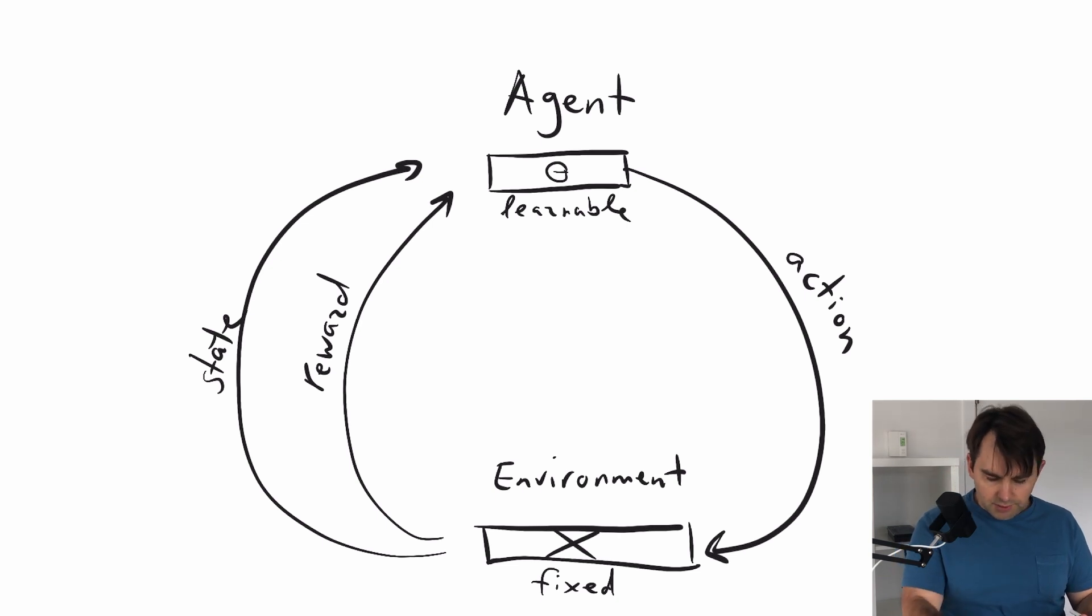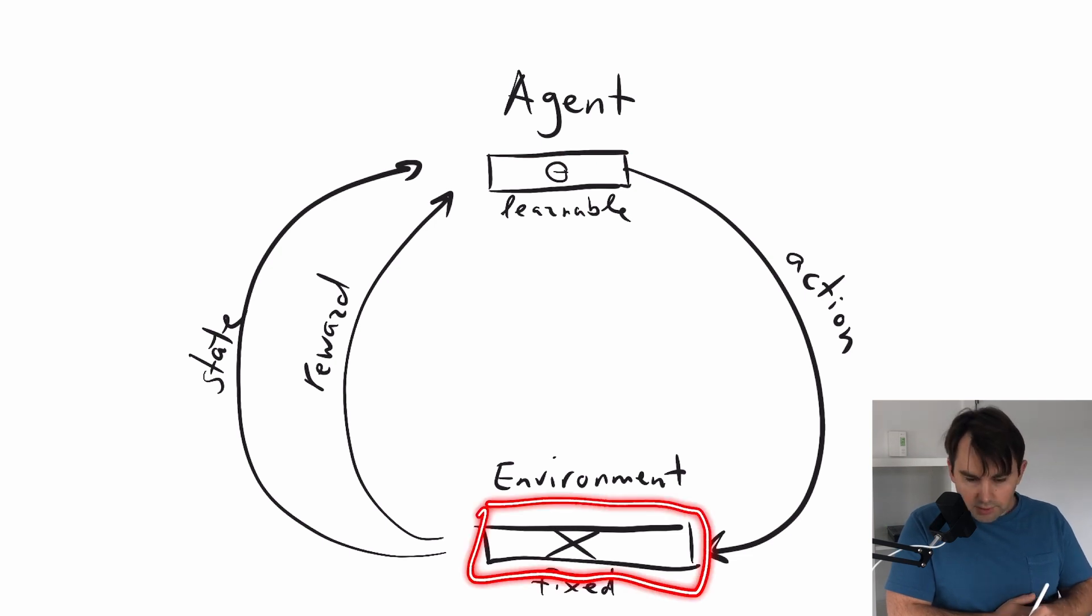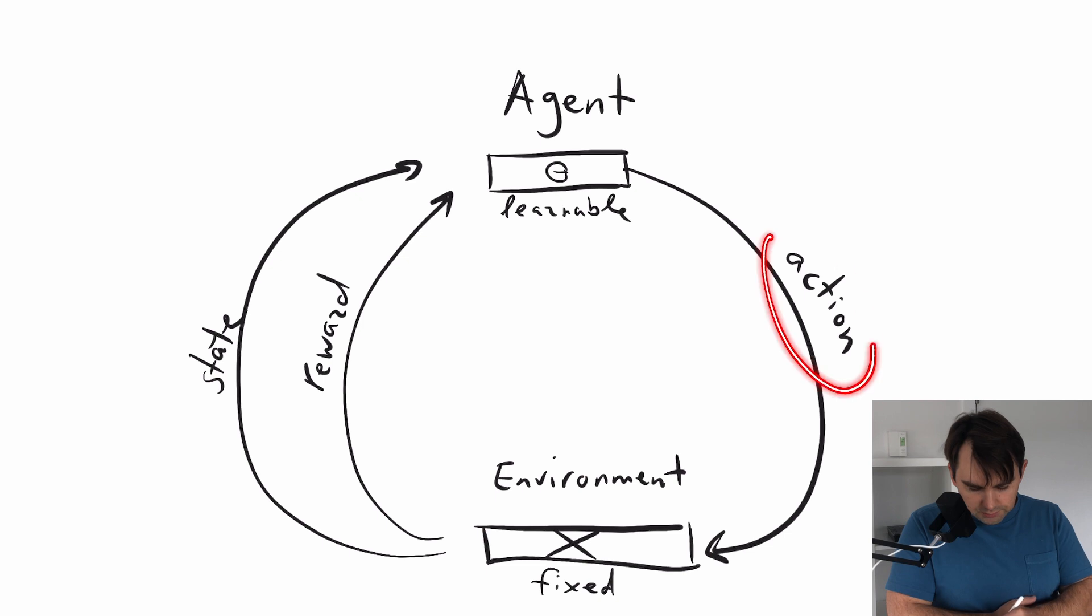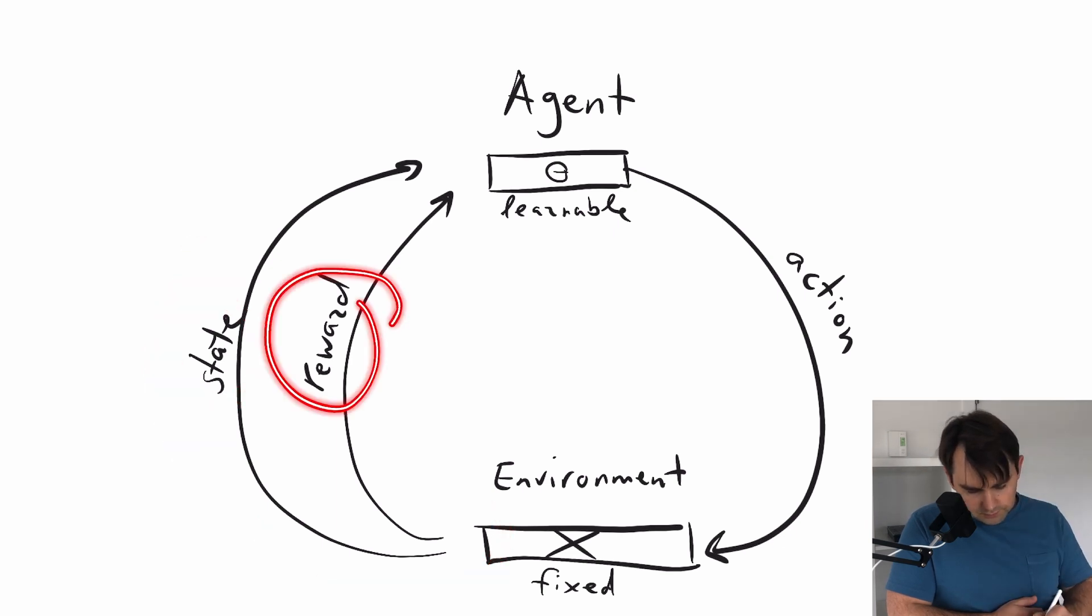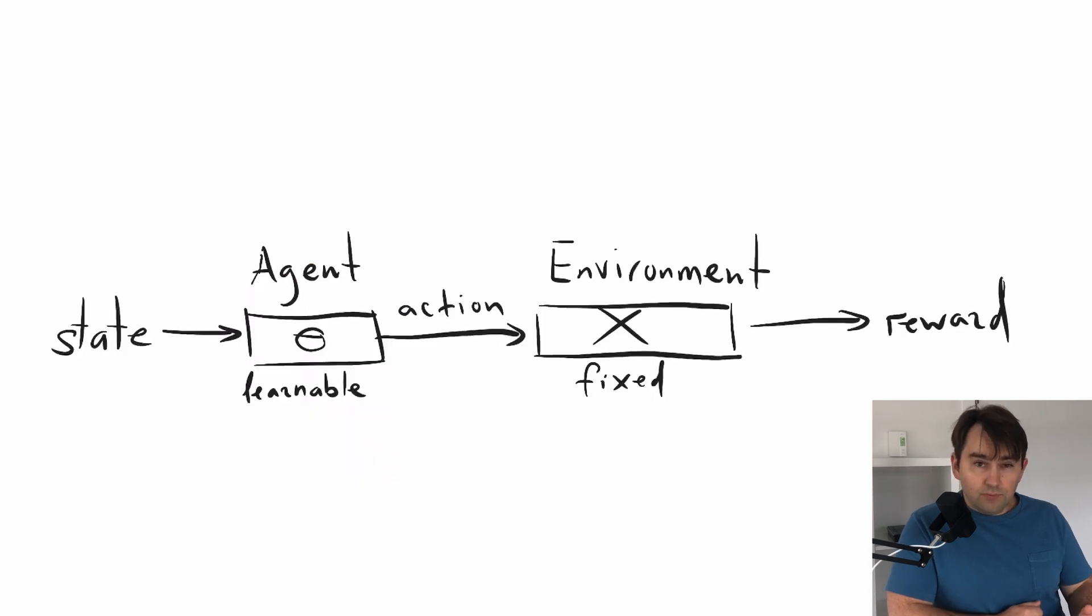In reinforcement learning, we have this agent that interacts with the environment. You can think of the environment as like a black box. It processes some action and produces the next state and some sort of reward. The problem we have is that the environment is not differentiable because it might be doing some very complicated things for which we don't have actual expression or function. We are not able to compute the derivative of it.